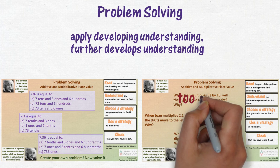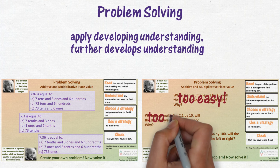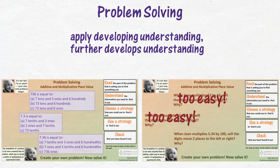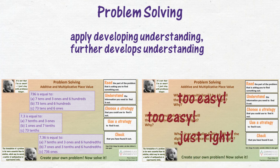If one level of the problem is too easy, they look at the next level. If the next level is too easy, they look at the next level until they find and solve the problem at their current understanding.